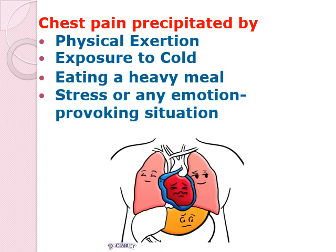Eating a heavy meal causes the blood to shunt to your mesenteric area — the blood supply for your abdominal organs — which reduces blood flow to your heart. Stress or any emotion-provoking situations would cause the release of catecholamines.